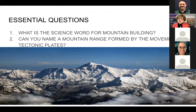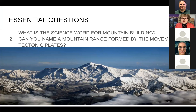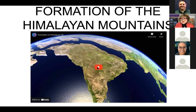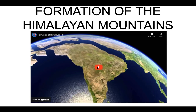Our two essential questions: number one, what's the science word for mountain building — orogeny; and number two, can you name a mountain range formed by the movement of tectonic plates? The Himalayas are caused by convergent movement of tectonic plates. This video shows the formation of the Himalayan mountains — the Indian plate moving into the Eurasian plate and causing the orogeny of the Himalayan mountain range.